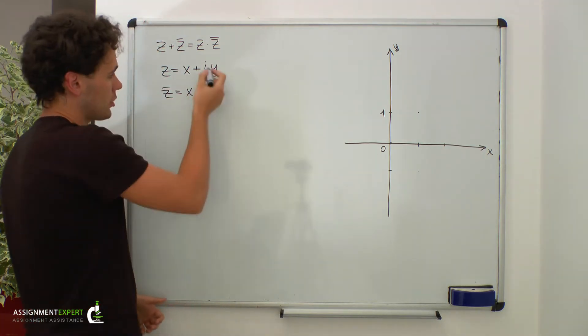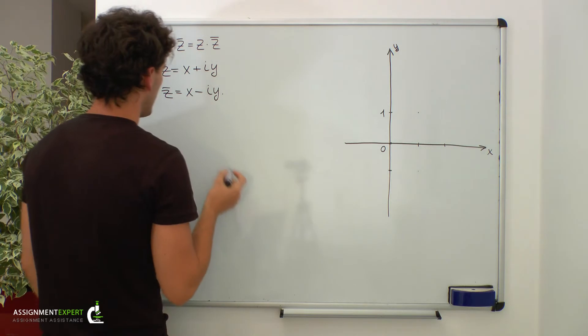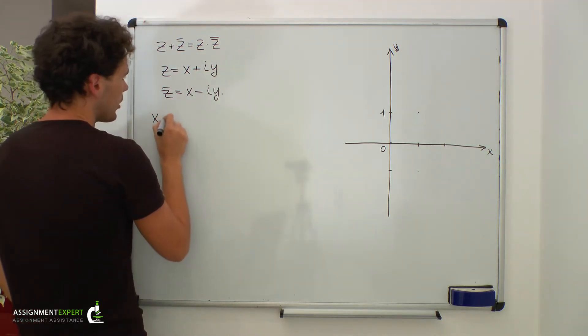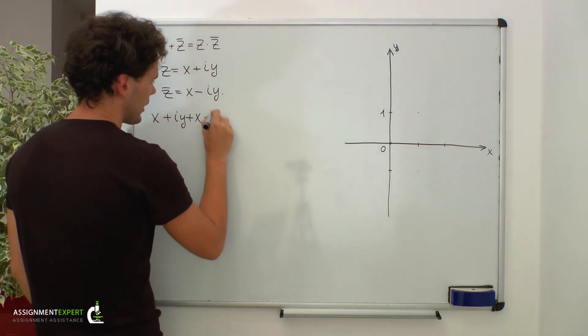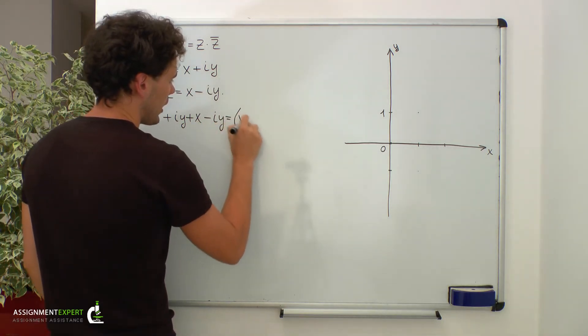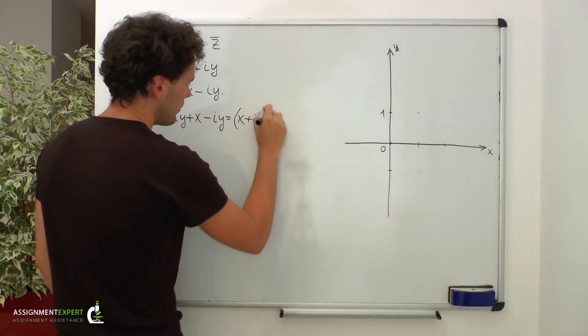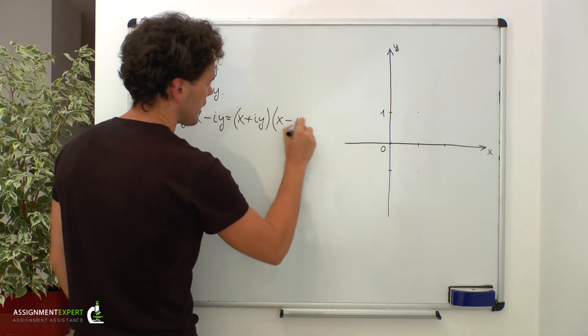Now let's substitute these two expressions into the given equality. And we obtain x plus i times y plus x minus i times y equals x plus i times y times x minus i times y.